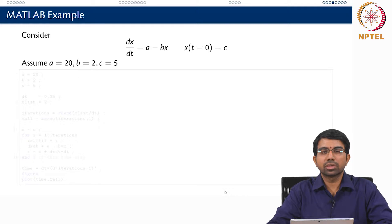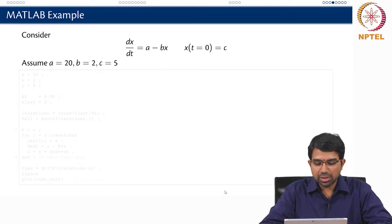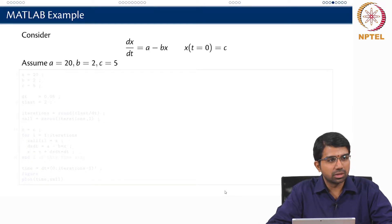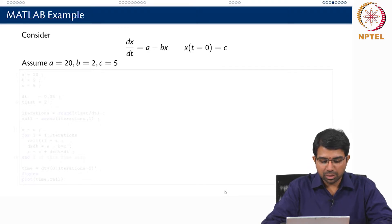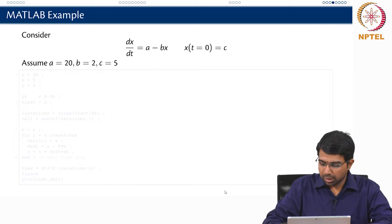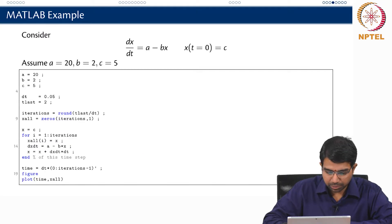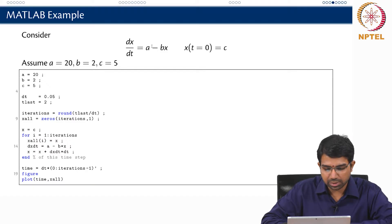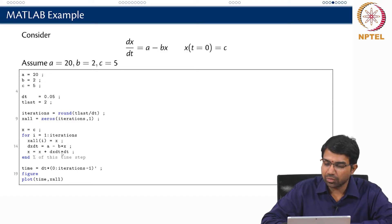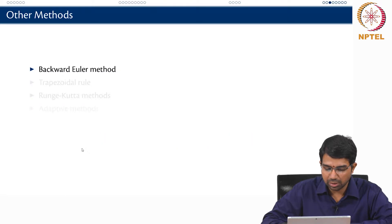Let us look at a MATLAB example of how to solve ODEs. We start with a simple ODE system: dx/dt = a minus bx. Most of you can actually integrate this analytically, but how would you implement this in MATLAB? You first set up a vector for all the values of x, and the most important part is computing dx/dt. dx/dt is a minus bx, and x equals x plus f(x) times delta t.